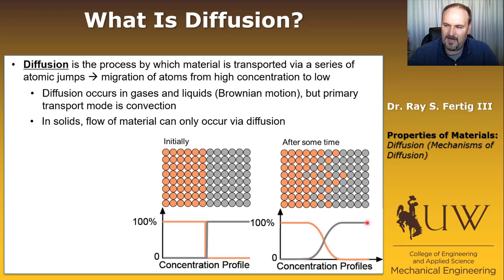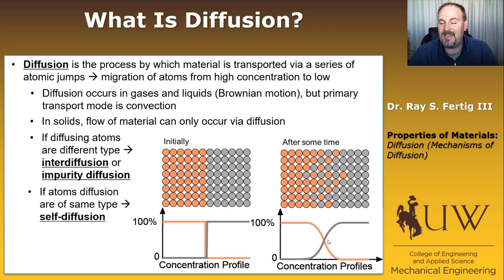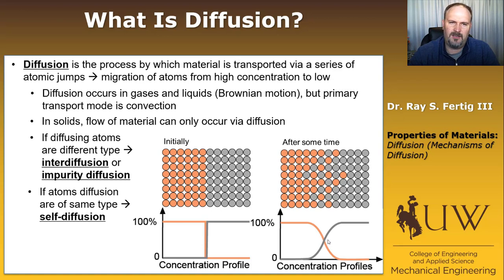The result is that it's still predominantly atom B on the right and atom A on the left, but at the interface they're starting to diffuse across. If the diffusing atoms are of a different type, we refer to that as interdiffusion or impurity diffusion. In contrast, if the atoms are of the same type, we call that self-diffusion — it simply means atoms are moving around within the material.